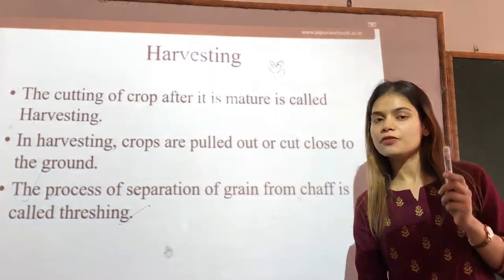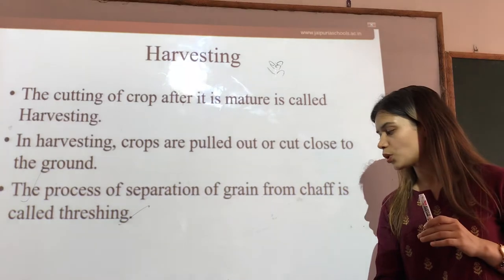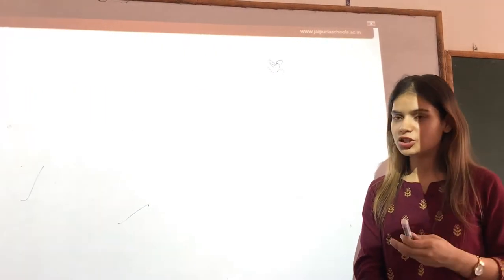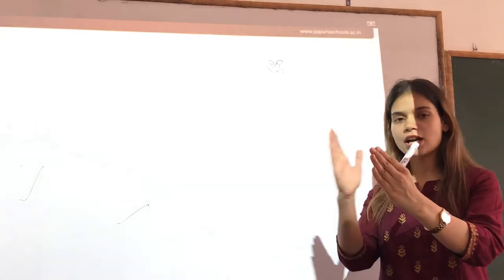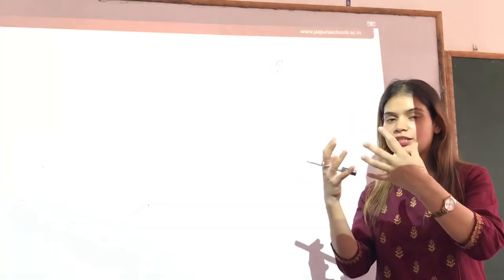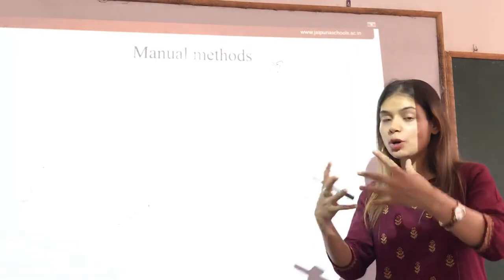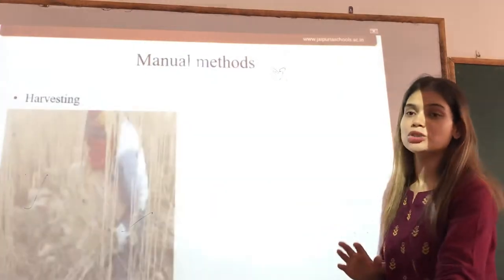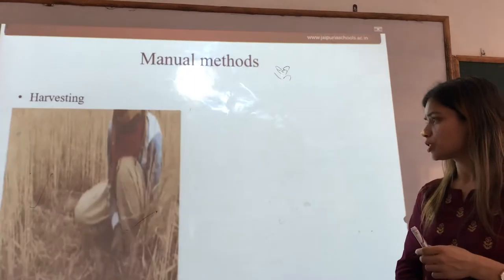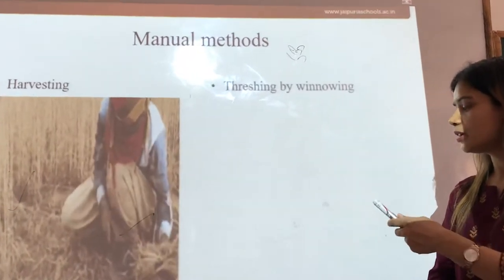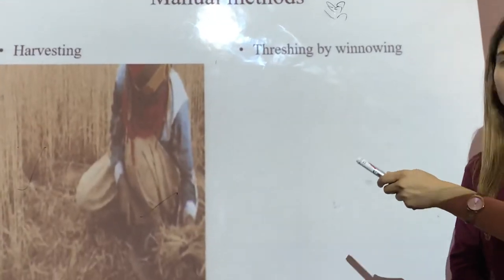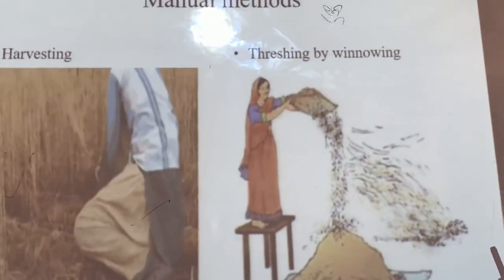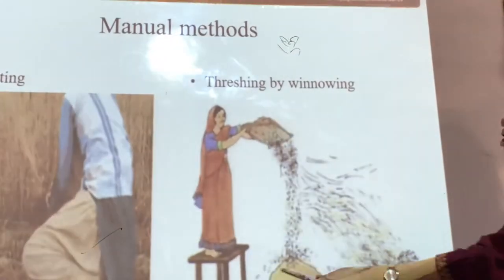That process of separating husk or chaff from the main grain is known as threshing. In India, the farmers do threshing by their own or they use mechanical methods to do the threshing. Harvesting is accompanied by threshing if the crop is of grain. Here you will see one manual method by which farmers harvest the crops — this is a farmer who is harvesting the crop by using a sickle. Once the harvesting is done, they need to do the threshing.